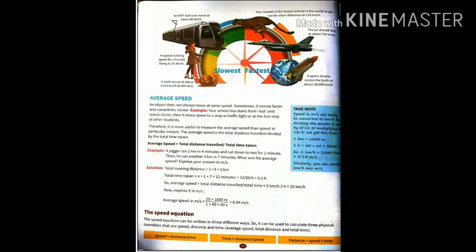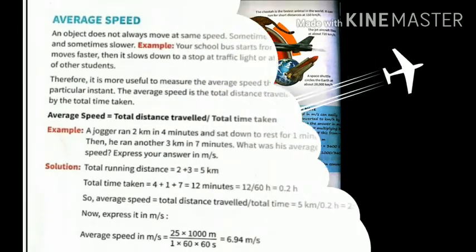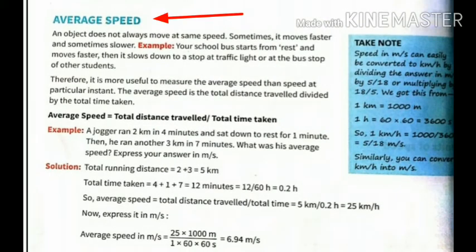Now in this video we will start the new topic from page number 14. So come to page number 14. Here the topic is given: average speed. An object does not always move at the same speed. Sometimes it moves faster or sometimes slower.